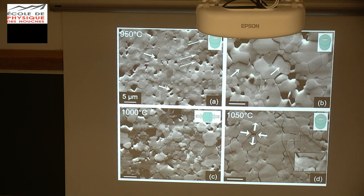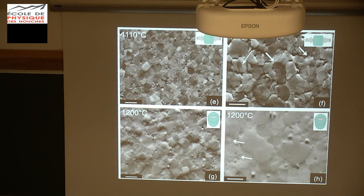Up to now, to describe grain boundary sliding in olivine, we only had cartoons. So this is a nice example that it is happening — at least in my lab. We increased temperature, so the texture changed a little bit. It seems to be more dense at 1110 degrees Celsius. We also see, even in the backscatter images, some substructure appearing. But you still have gaps, still things that seem to prove that grains have slid relative to one another.